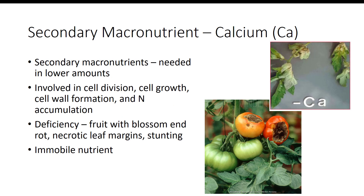Secondary macronutrients are needed in much lower amounts than primary macronutrients. In fact, they are typically required in trace amounts and are not generally deficient in soils. The secondary macronutrients are calcium, magnesium, and sulfur. Calcium is involved in a number of physiological processes in plants, including cell division, cell growth, cell wall formation, and nitrogen accumulation. Plants that are deficient in calcium have fruits with blossom-end rot — that is, the bottom portion of the tomato fruit rots or turns brown or black. Calcium deficiency symptoms appear initially as localized tissue necrosis, leading to stunted plant growth, necrotic leaf margins on young leaves or curling of the leaves, and eventual death of terminal buds and root tips. Since it is an immobile nutrient, deficiency begins with the younger leaves.